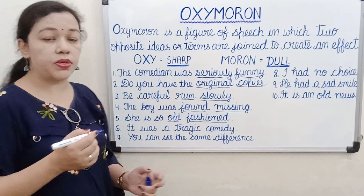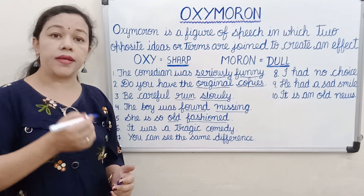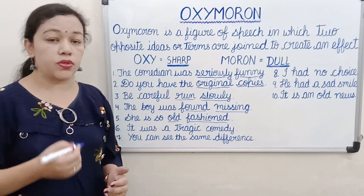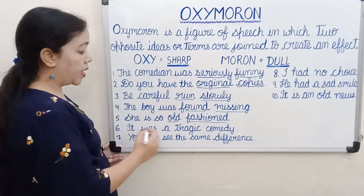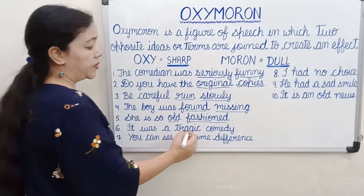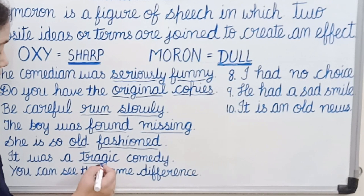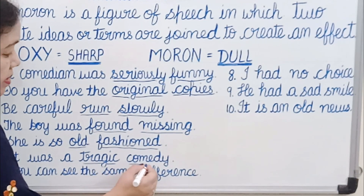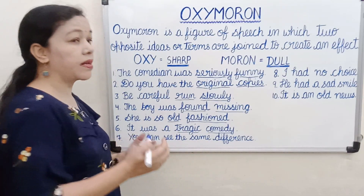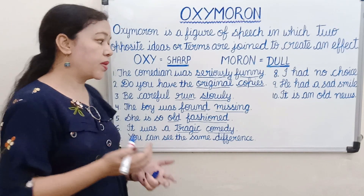Next: 'It was a tragic comedy.' Here, tragic means something related to tragedy, and comic means something which has light entertainment. So both are opposite words coming together in a sentence, making it an oxymoron.